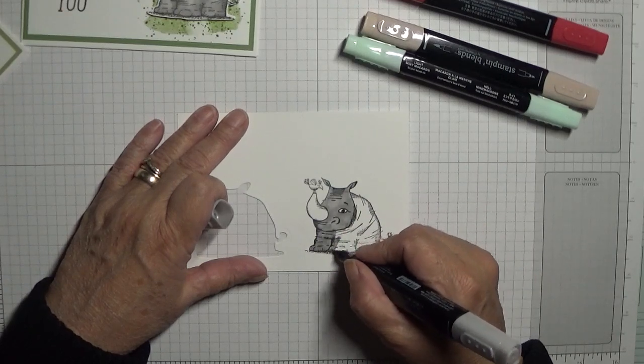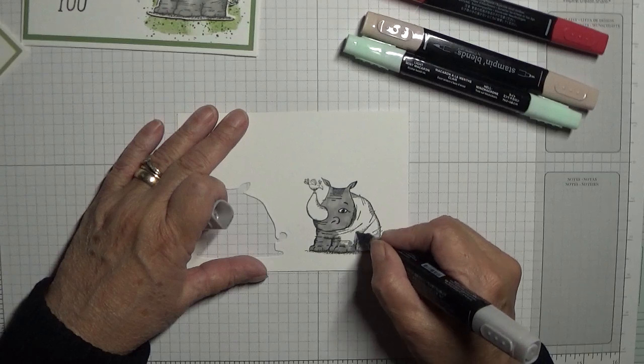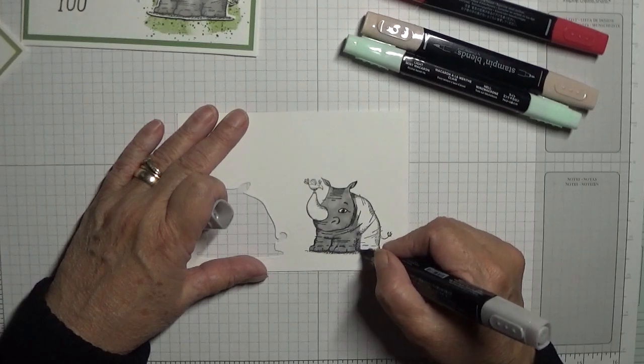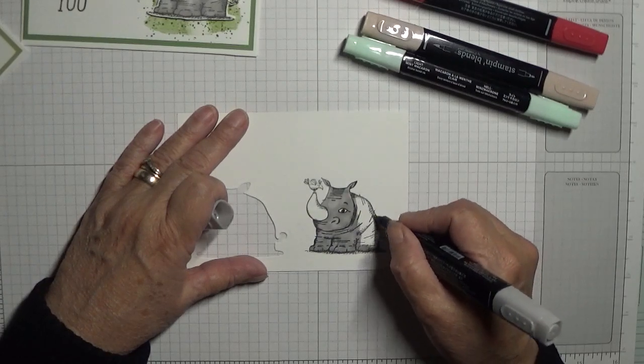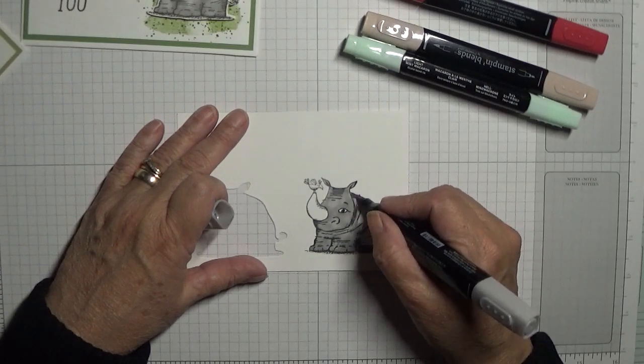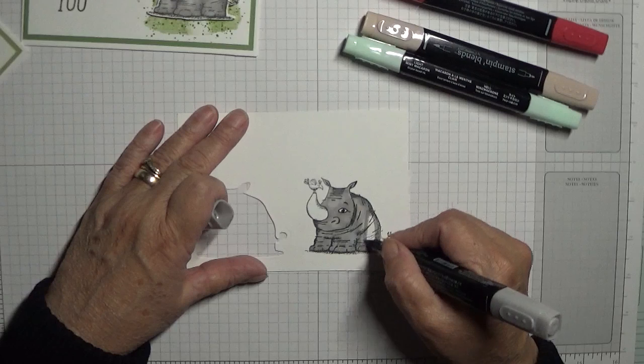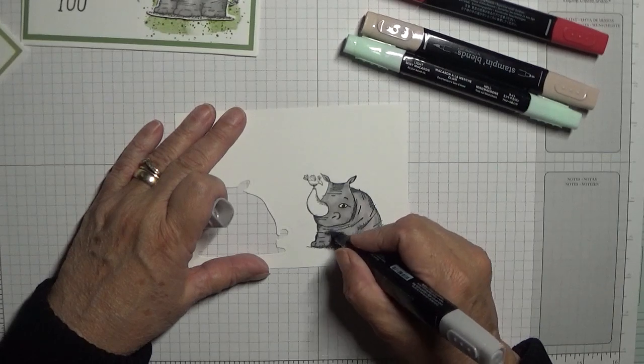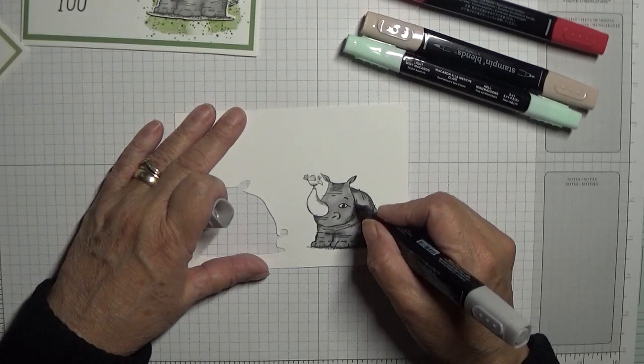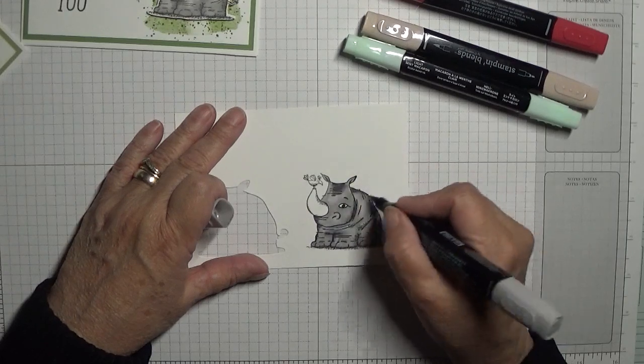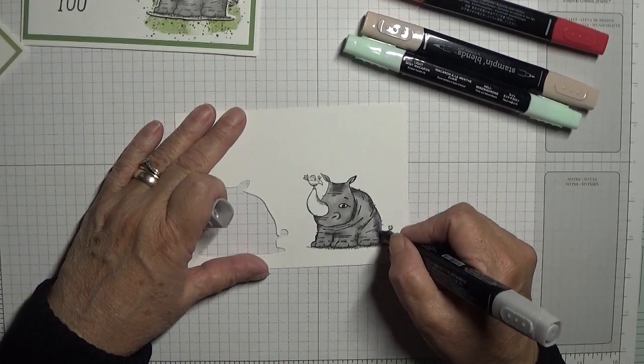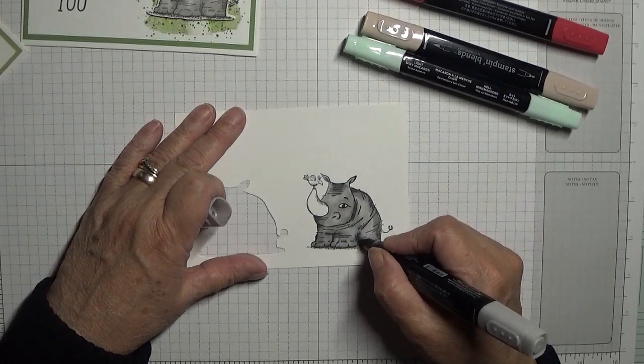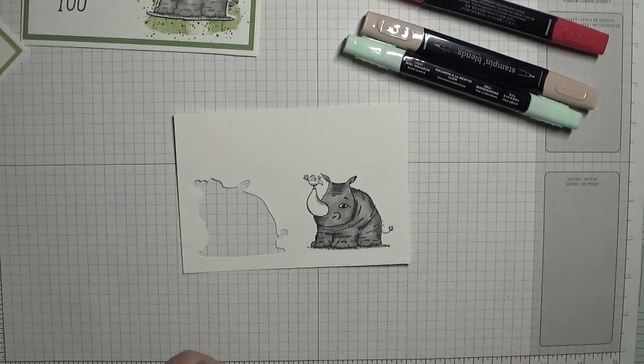You can just go over them again once you've colored in, make it a little bit darker where the shading should be. So just scribble in where you think the shading is. There we have it.